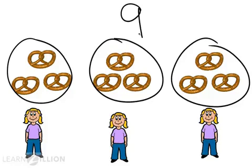So, although our group is broken into parts, we still have nine pretzels, which is different than when we subtracted because the value of our total group changed.